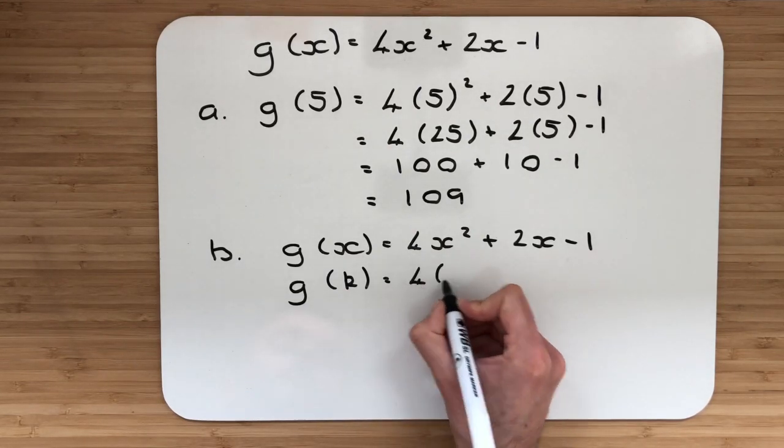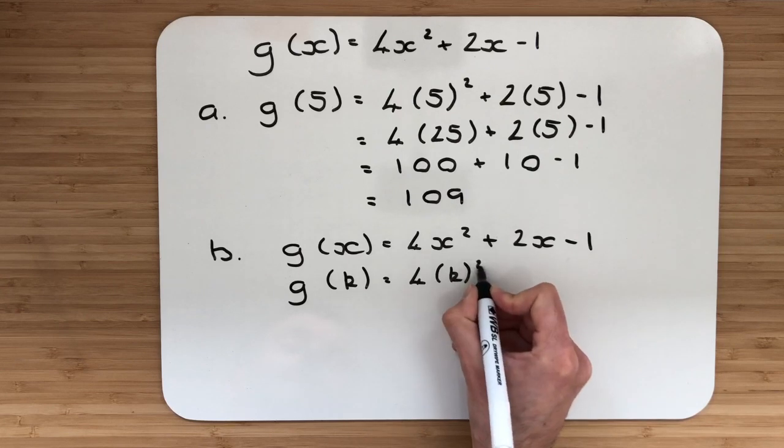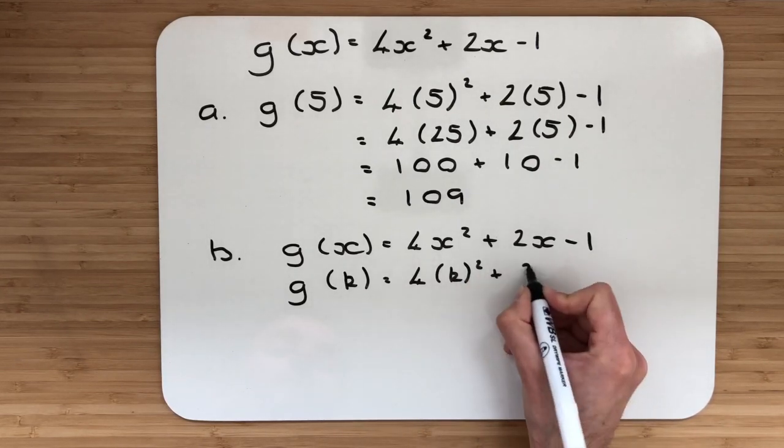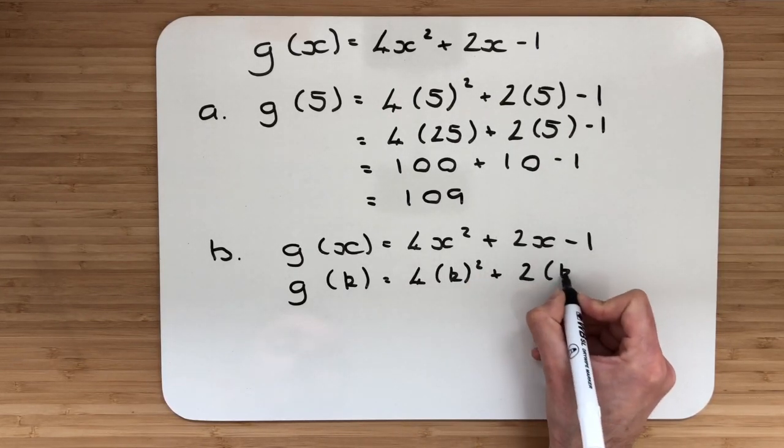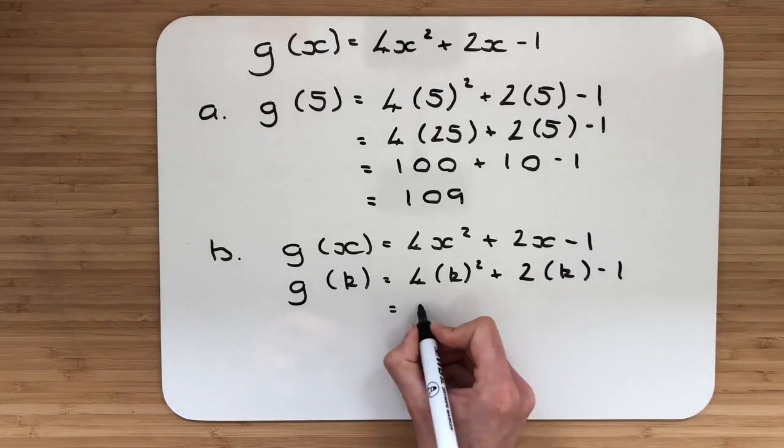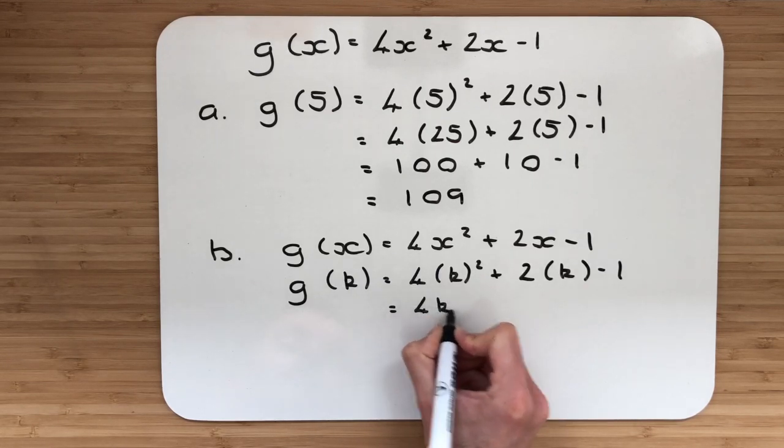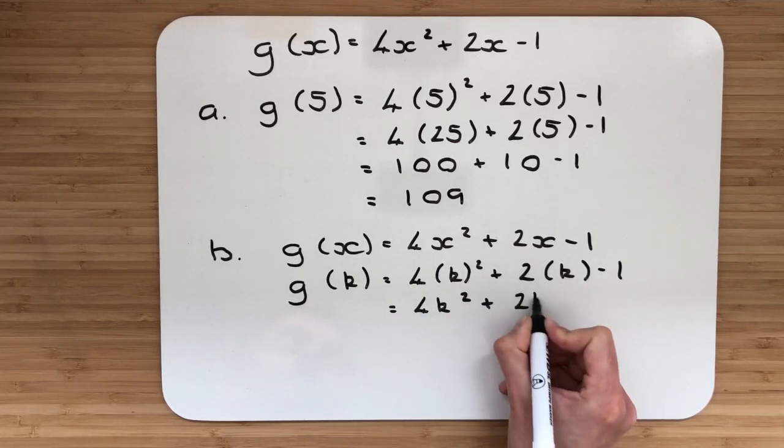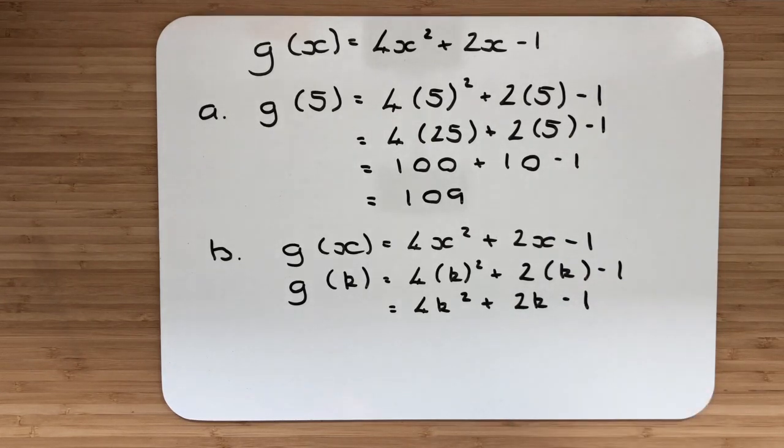So I've got 4 multiplied by k squared, adding 2 multiplied by k, and then subtract the 1. Let's just tidy that up without the brackets. So that will be 4k squared, adding 2k, subtract the 1. And that's your expression.